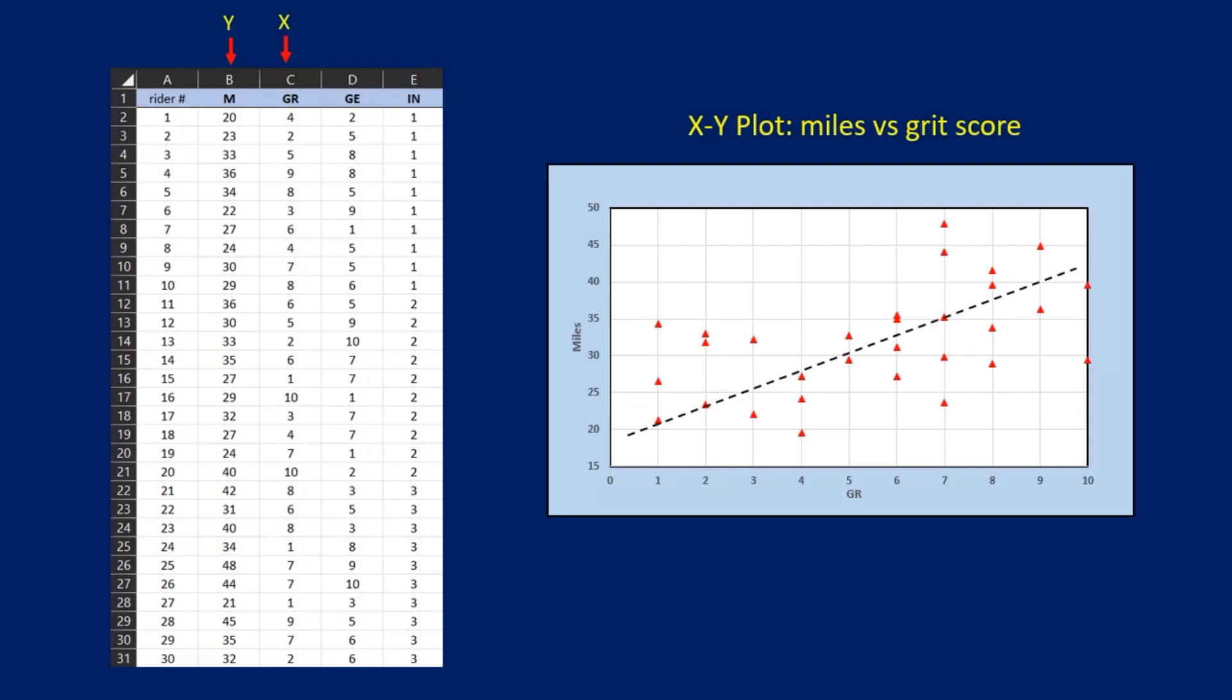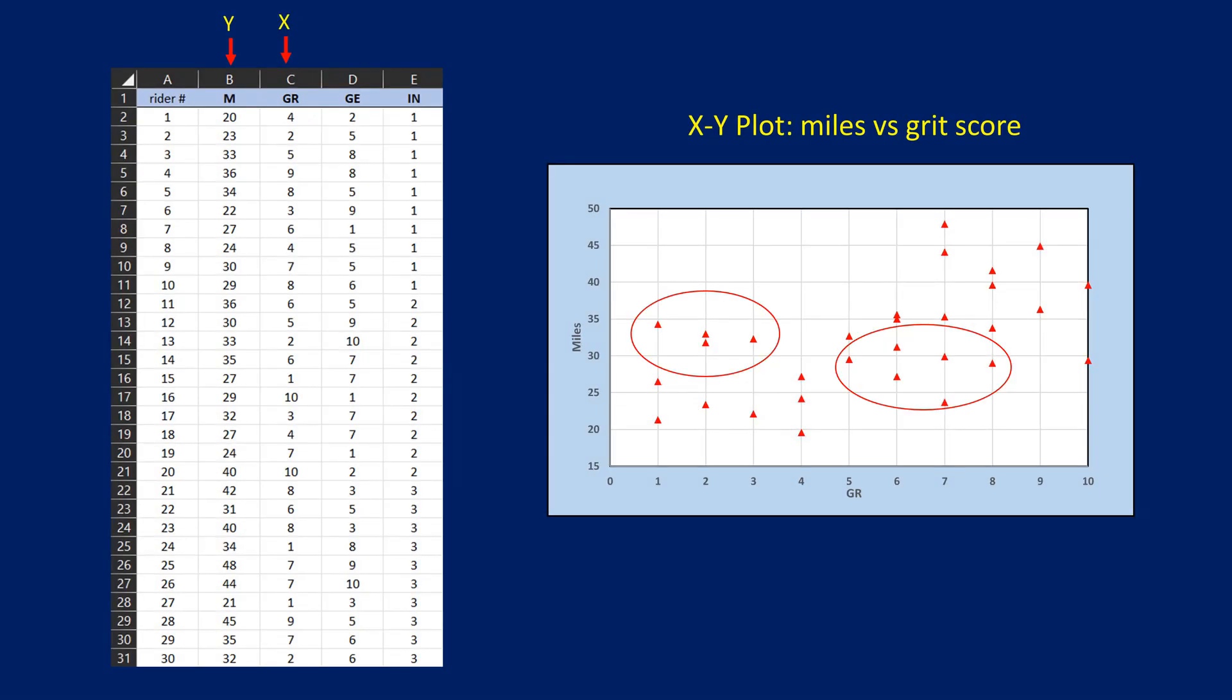That's confirmed when I ask Excel to fit a trend line to the plot. Excel's trend line shows how the values of m change, on average, as the values of gr increase. However, another thing to observe here is that some riders with low gr scores perform better than riders with higher gr scores. So clearly, gr scores don't entirely explain the variation in m.